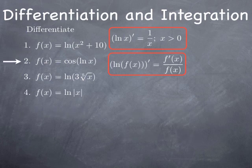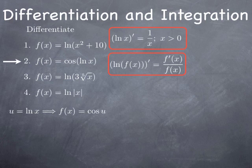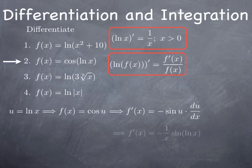The second function, cos(ln x), can be seen as cos(u) where u = ln(x). Applying the chain rule: the derivative of cos(u) with respect to u is −sin(u), multiplied by the derivative of u with respect to x, which is 1/x. Replacing u by ln(x), we obtain −(1/x)·sin(ln x).